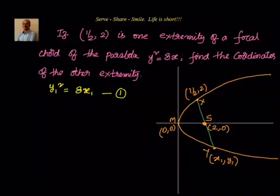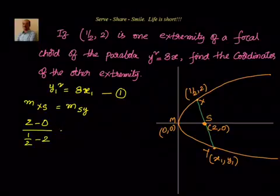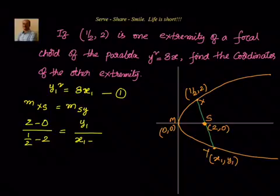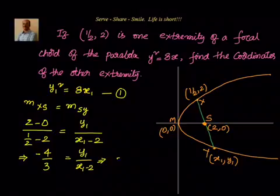First equation: y1² = 8x1. Second equation: slope of XS equals slope of SY because XY is one line. Slope of XS = (2 − 0) / (1/2 − 2) = 2 / (−3/2) = −4/3. Setting this equal to slope of SY, which is y1 / (x1 − 2), we get −4/3 = y1 / (x1 − 2), which gives 3y1 = −4x1 + 8.